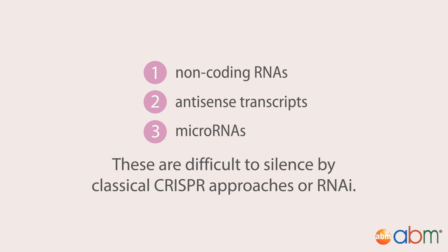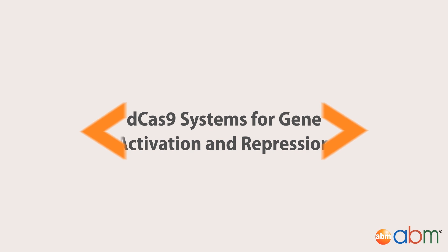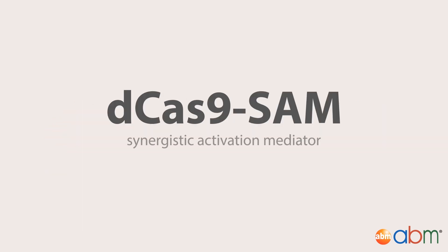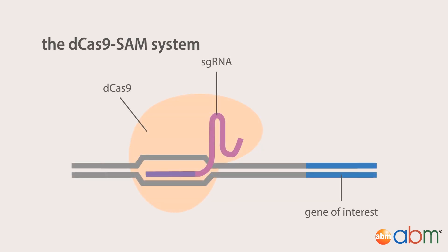These targets are all notoriously difficult to silence by classical CRISPR approaches or RNAi, but they are no longer out of reach thanks to CRISPR. Let's go through a few of the ways scientists have repurposed dCas9 for gene activation and repression. The dCas9 SAM system is a powerful tool for amplifying gene expression via the recruitment of transcriptional activators to a targeted gene.